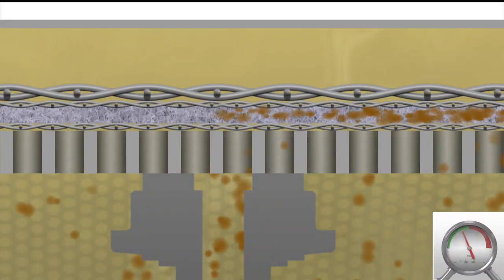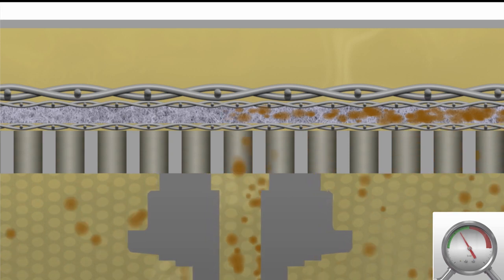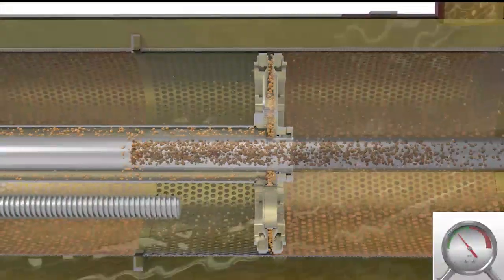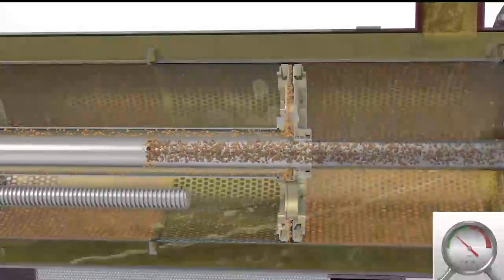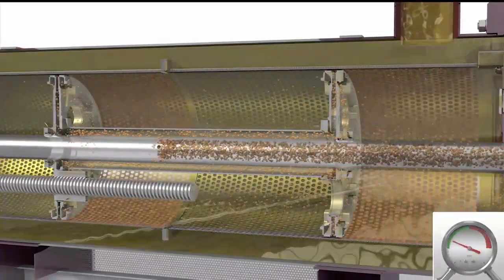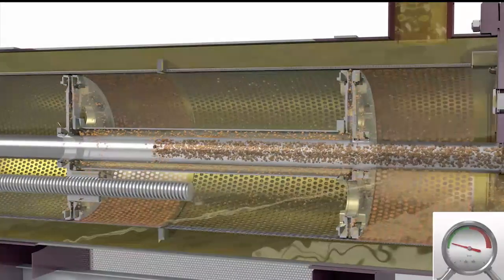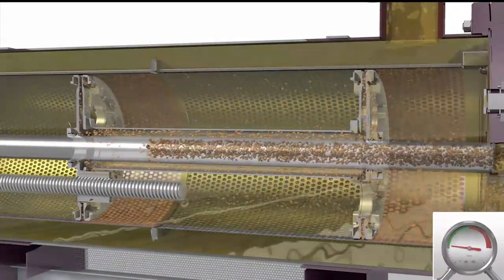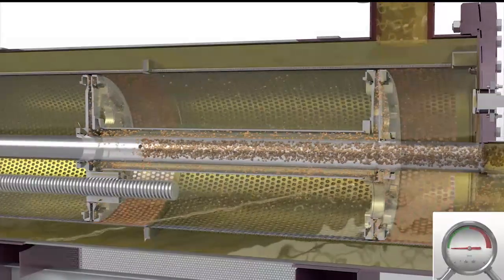The sealing rings of the backwash piston are pressed against the perforated drum, whereby the best possible sealing between unfiltrate and reject chamber is realized. Bypass flows are prevented, so the entire backwash flow has to go through the filter material. This guarantees lowest possible medium losses while providing the highest possible cleaning effort.